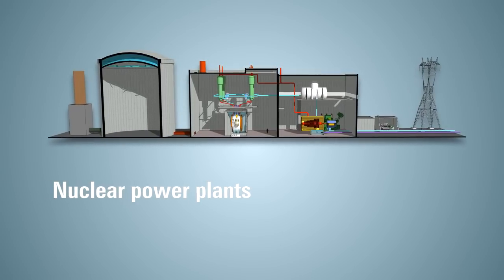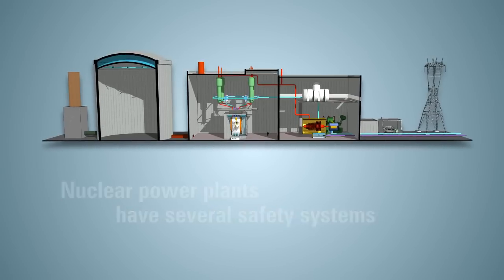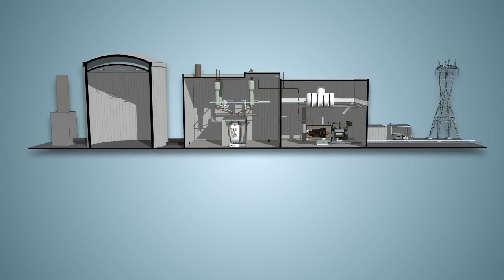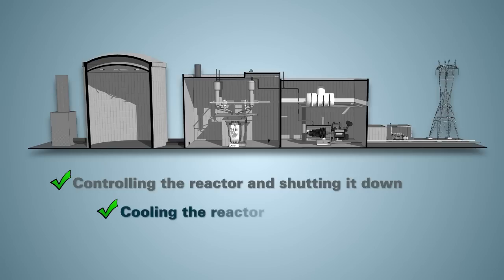Nuclear power plants have several safety systems that act as backups to each other. They perform three fundamental safety functions: controlling the reactor and shutting it down, cooling the reactor, and containing radiation.